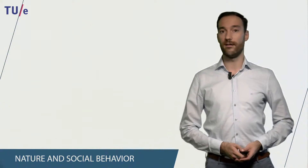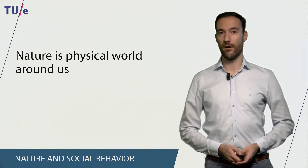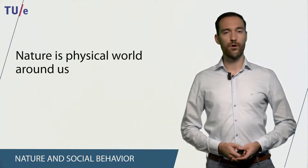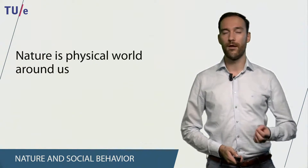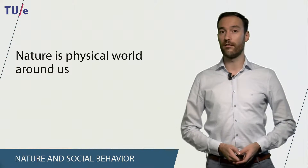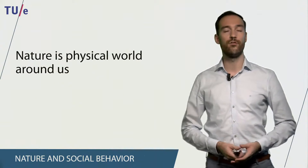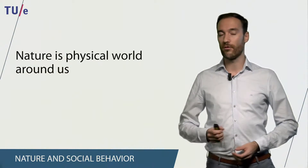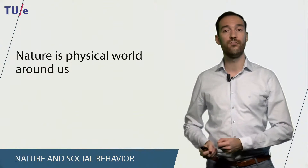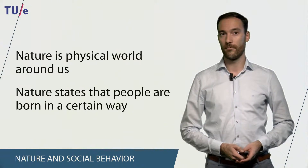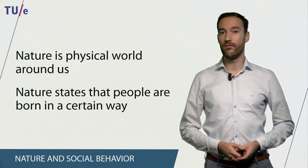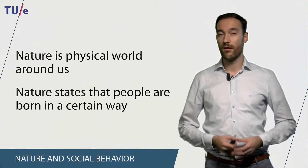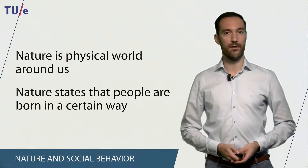Let's start with defining nature. Nature is the physical world around us, including all of its laws and processes. Many scientists work on understanding human behavior by using nature. For example, neuroscientists study the brain in order to understand human behavior. Geneticists study human genes to try to understand the relationship between genes and psychological traits. So in a way, nature states that people are born in a certain way.